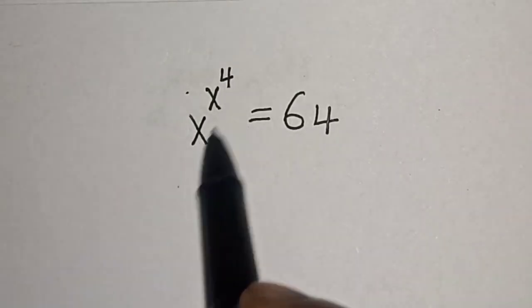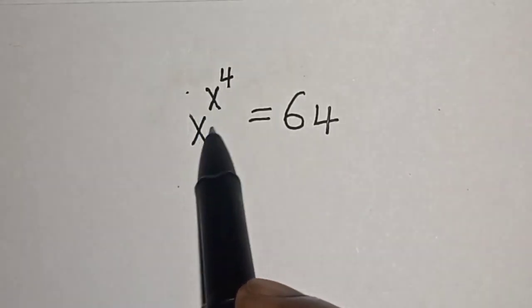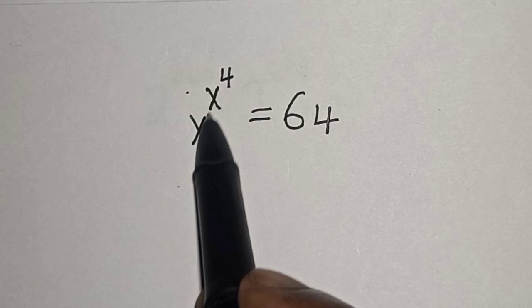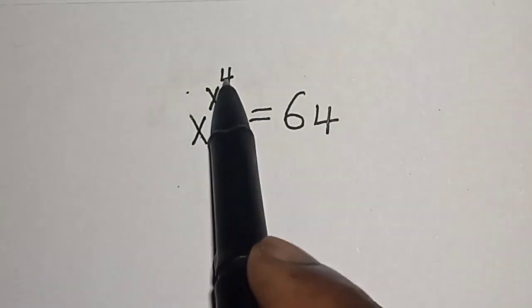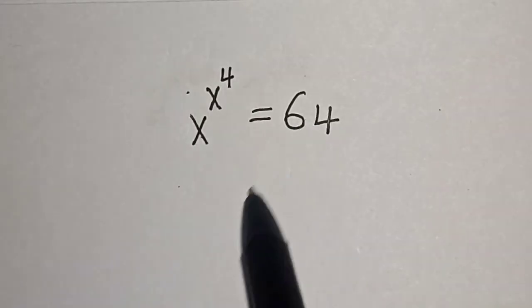Hello, welcome to MathGest. In this class, we want to find the value of s from this equation: s raised to power s raised to power 4 is equal to 64.